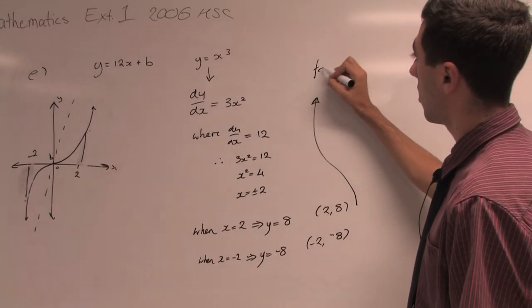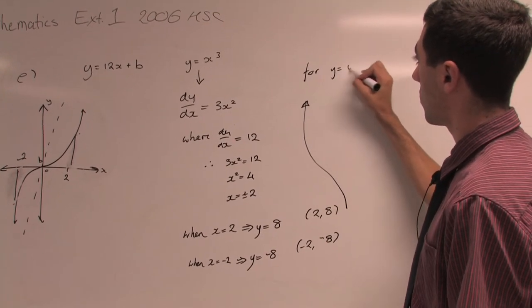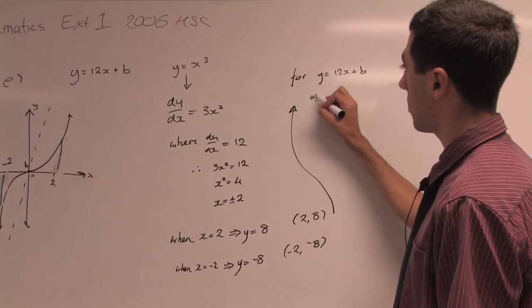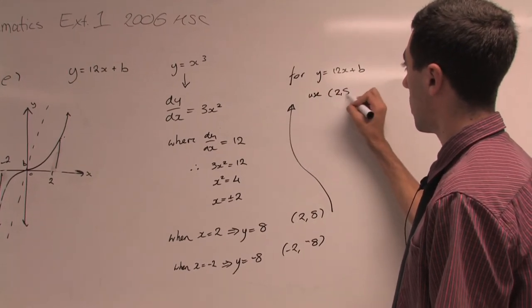For y = 12x + b, we now use the point (2, 8).